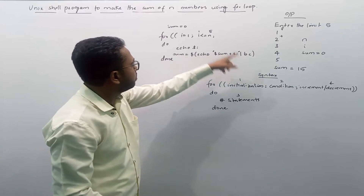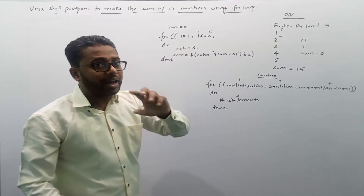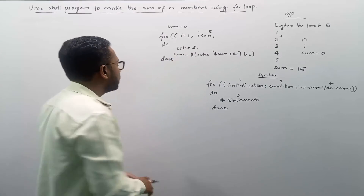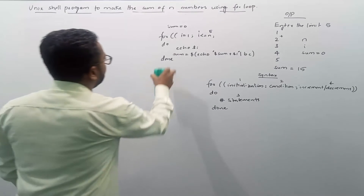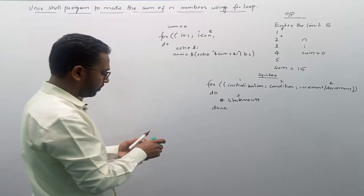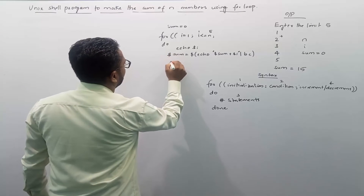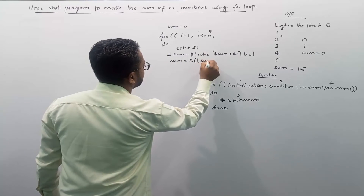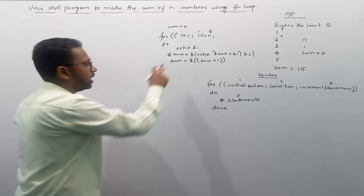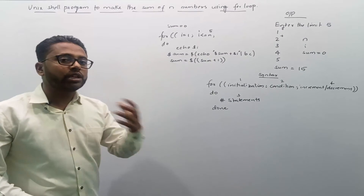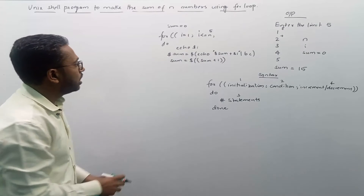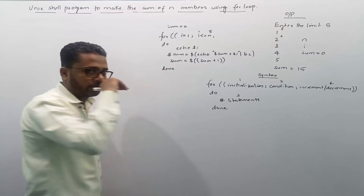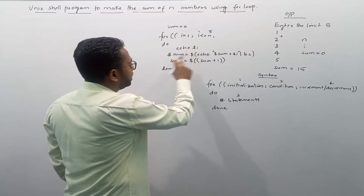Sum equals echo sum — which is zero — plus dollar i, which is 1, giving us 1 stored in sum. We can also use an alternate method: sum=$((sum + i)). Both methods work to make the sum of these numbers. If you don't want to use the bc method, just comment it out and use the double-bracket arithmetic instead. Then we close with done.